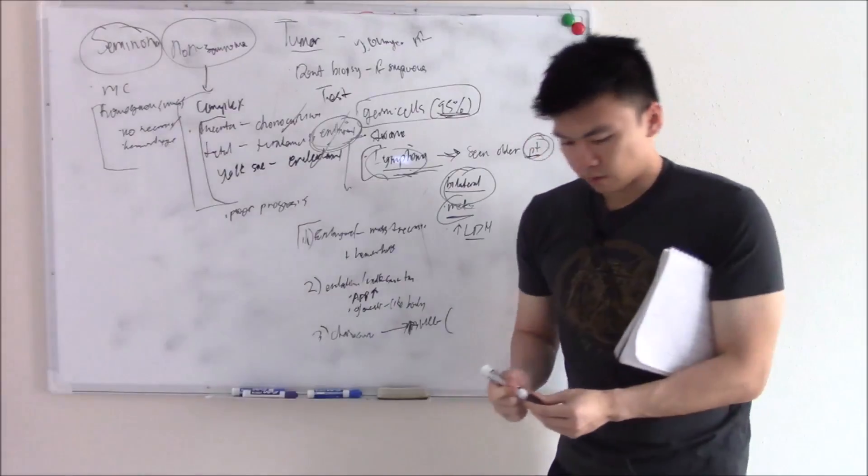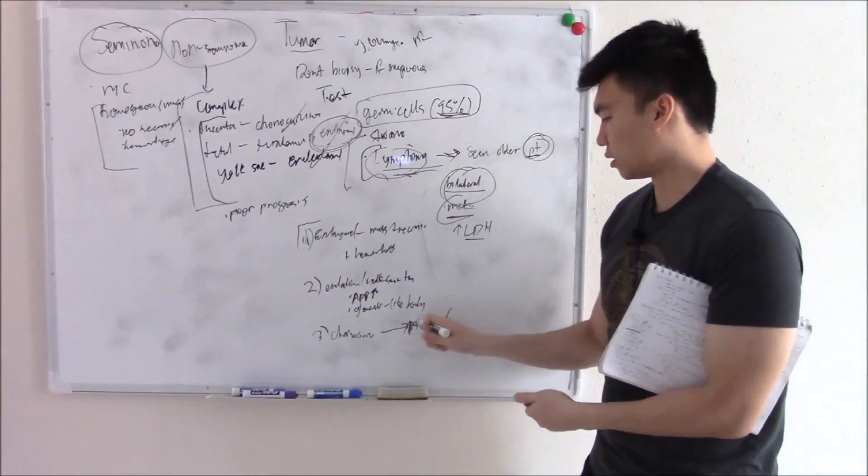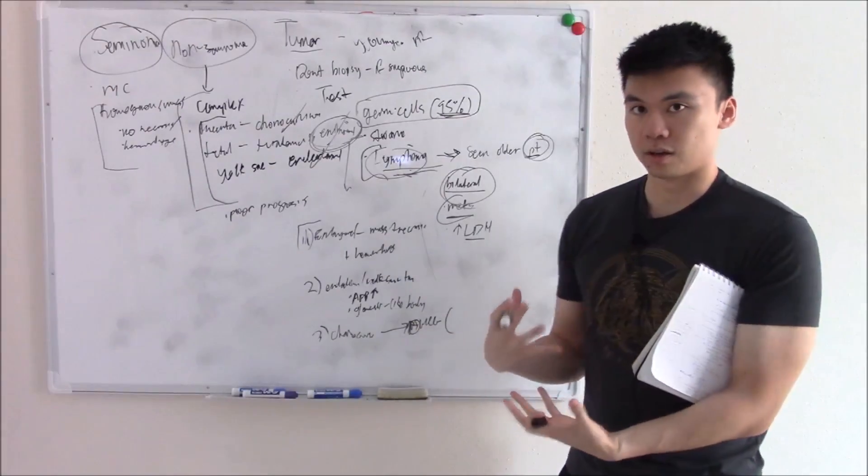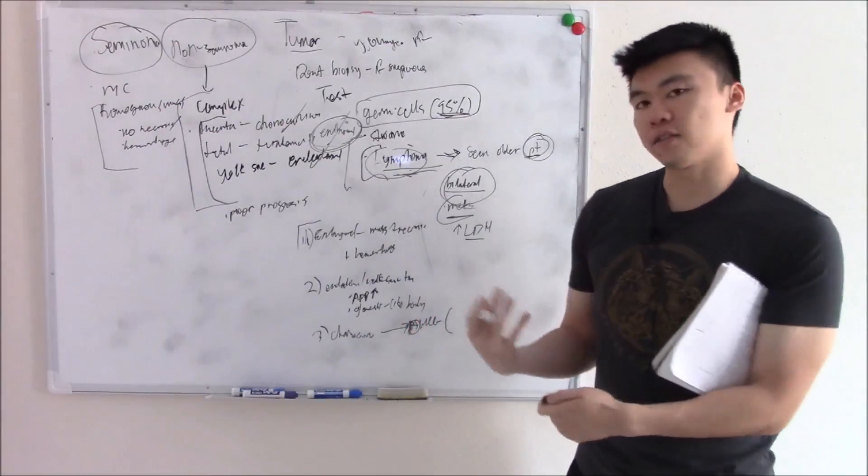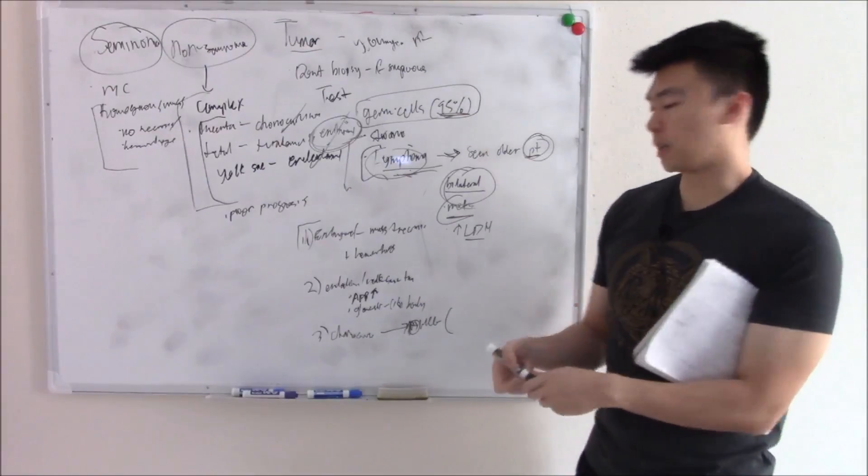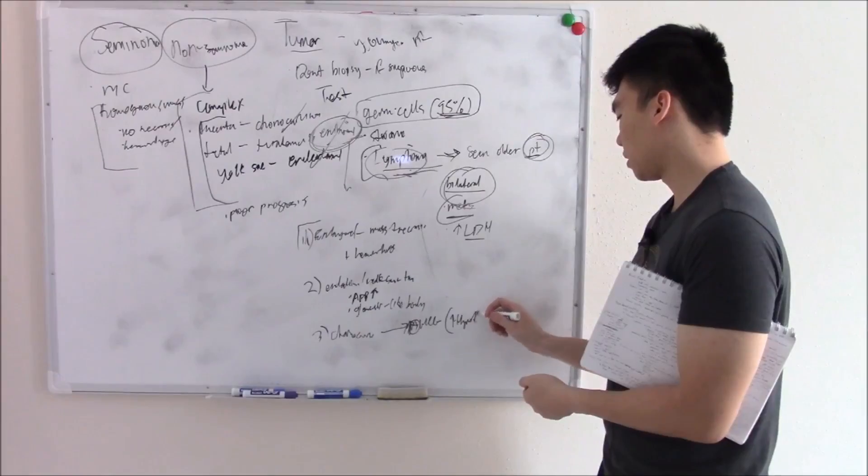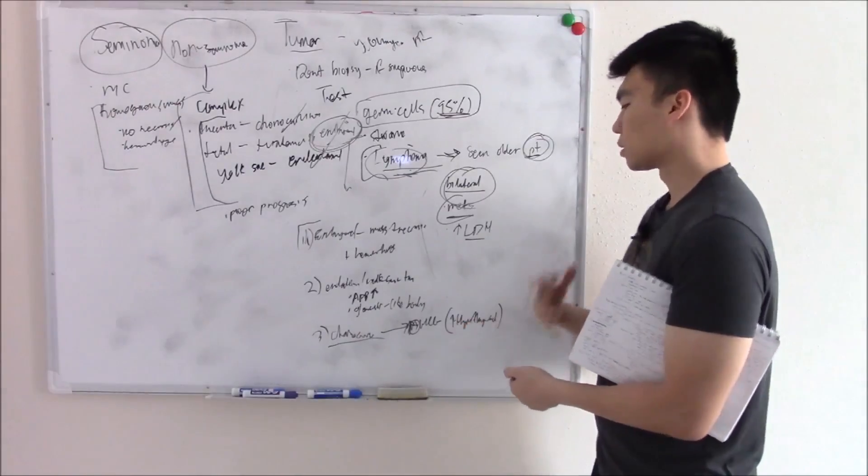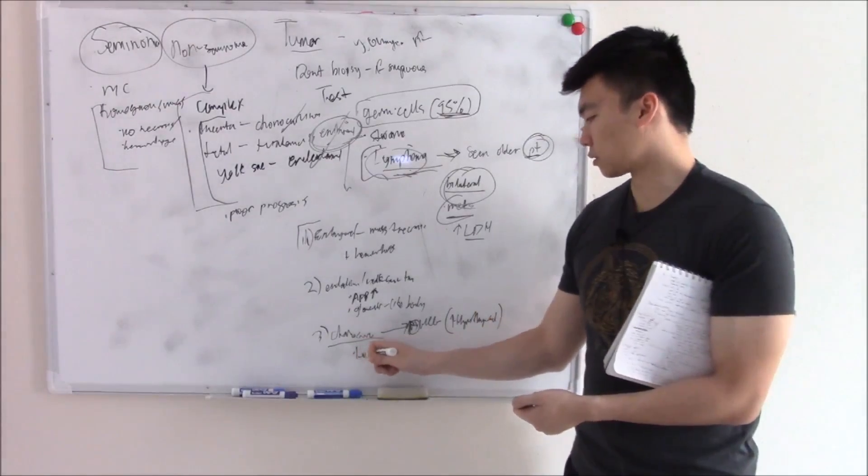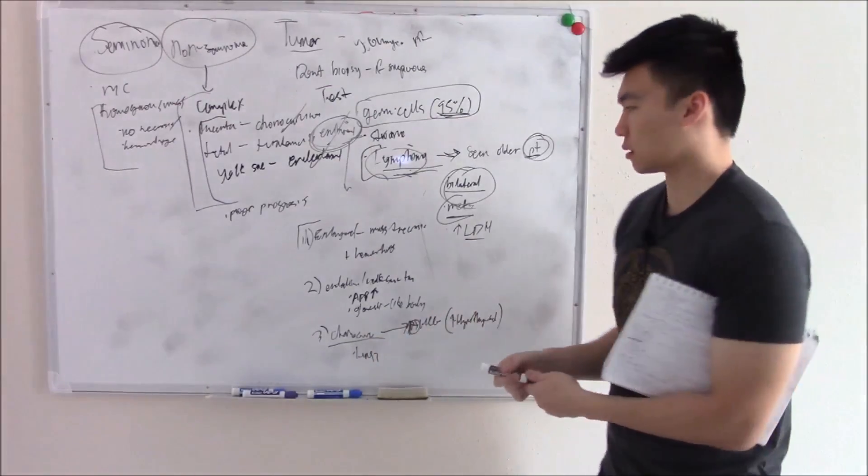And beta-hCG, recall has two subunits. One is the beta subunit. That's the one we measure in the urine for pregnancy tests. That's why we call it beta-hCG. It has an alpha subunit that's structurally similar to FSH, LH, and TSH. So you can have hyperthyroidism. Hyperthyroid. And then one of the most important things you need to remember about choriocarcinoma is that it loves the lungs. So chest x-ray is used to see if there's mets to the lungs.